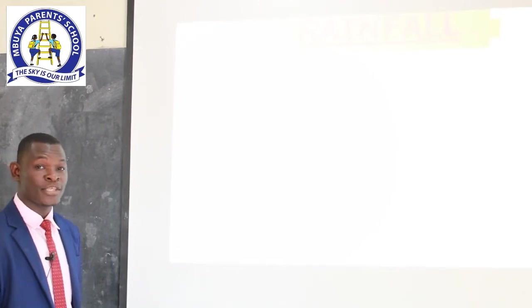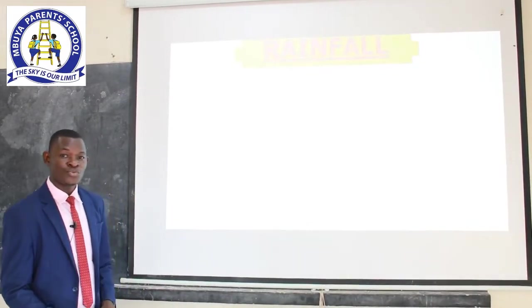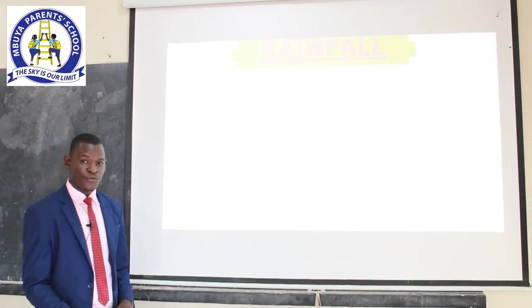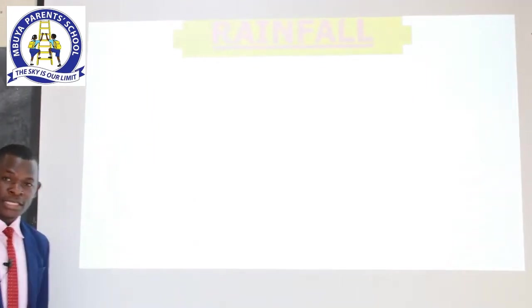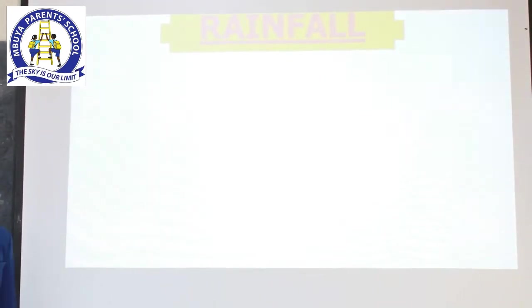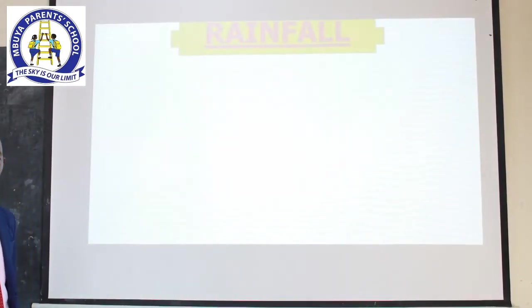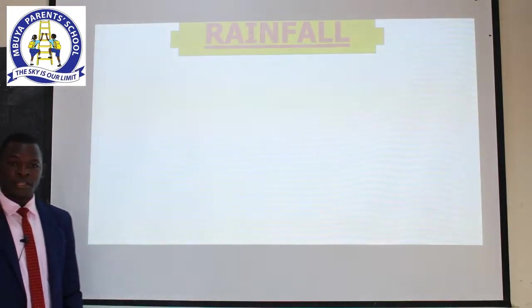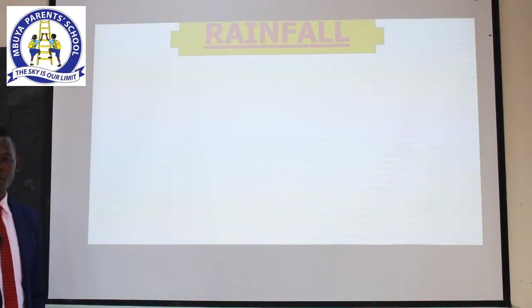Before that, we are going to set targets which we are going to achieve by the end of this lesson. By the end of this lesson, you must be able to give a difference between the three types of rainfall received in various areas. Secondly, you will be able to know what rainfall is, and thirdly, to appreciate nature by conserving the sources that help us in rain formation.